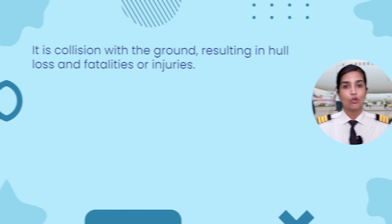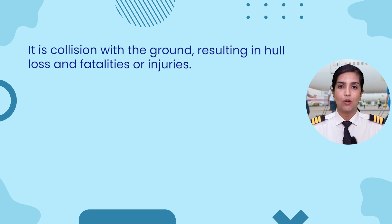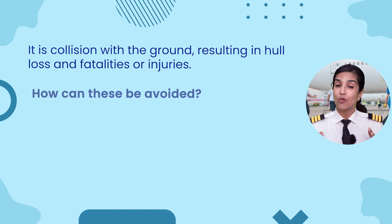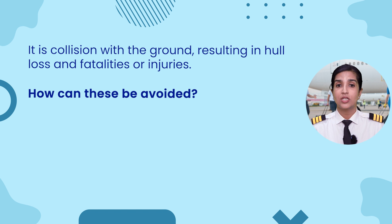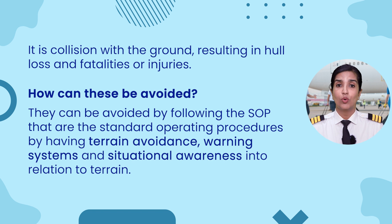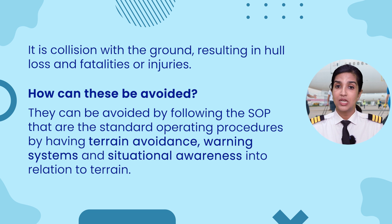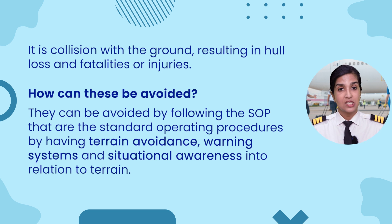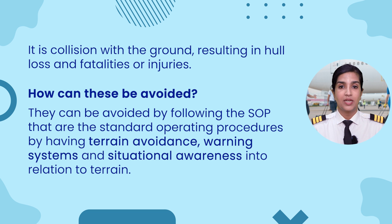What are the effects of CFIT? It is collision with the ground resulting in hull loss and fatalities or injuries. These can be avoided by following the SOPs — the standard operating procedures — by having terrain avoidance warning systems and maintaining situational awareness in relation to terrain.